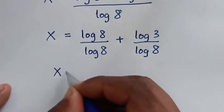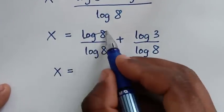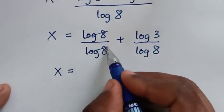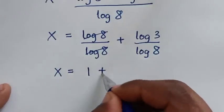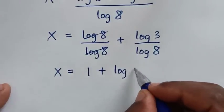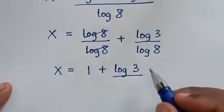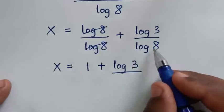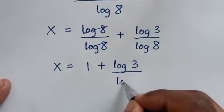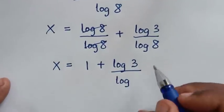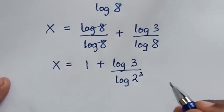So x is equal to log of 8 divided by log of 8, which is 1, plus log of 3 over log of 8. Now we express 8 as 2 to the power of 3.